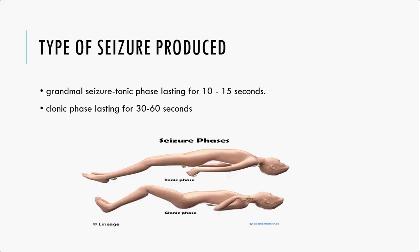The type of seizure produced is a grand mal seizure. It has a tonic phase lasting 10 to 15 seconds and a clonic phase lasting 30 to 15 seconds. In the tonic phase, the body becomes entirely rigid. In the clonic phase, there is uncontrolled jerking movement in the body.